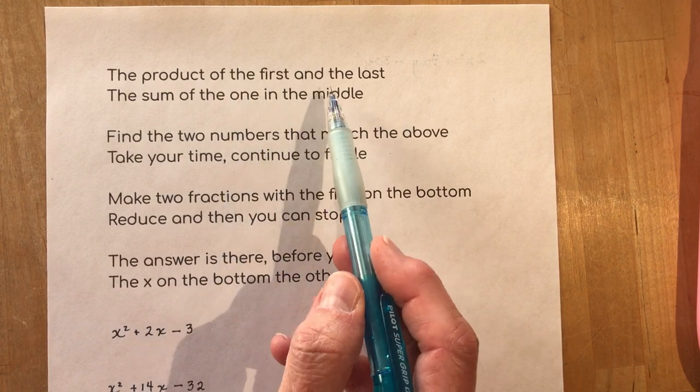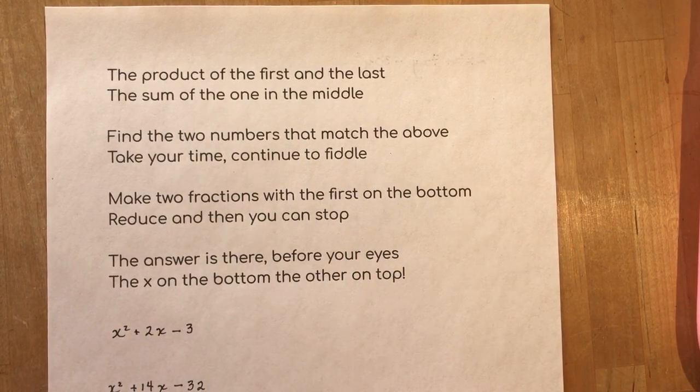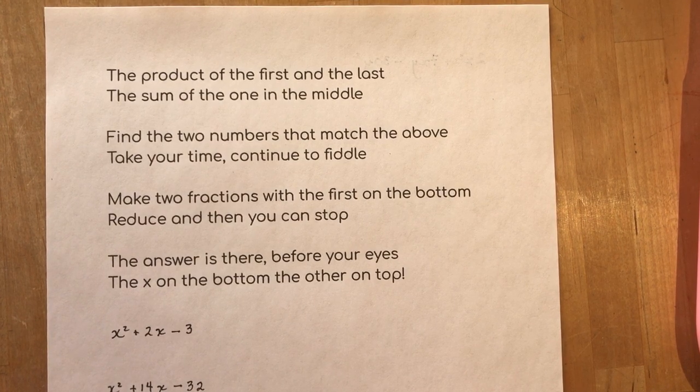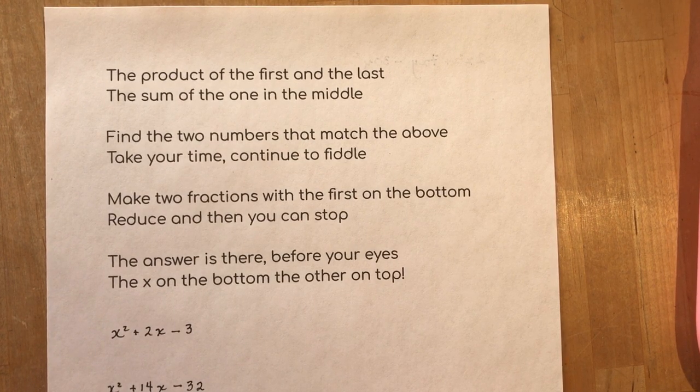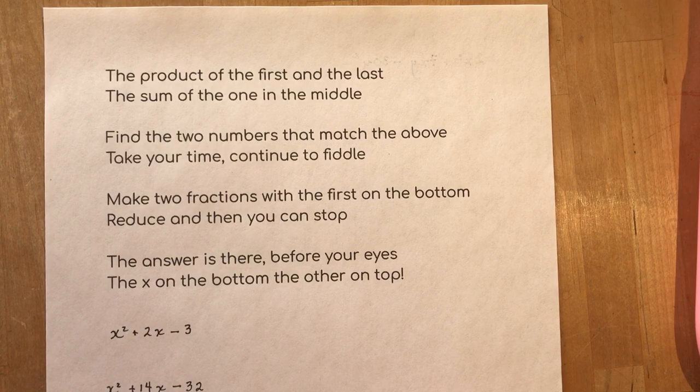So it's the product of the first and the last the sum of the one in the middle. Find the two numbers that match the above. Take your time. Continue to fiddle. Make two fractions with the first on the bottom. Reduce and then you can stop the answers there before your eyes. The x on the bottom. The other on top. Now I'm going to show you how that works.